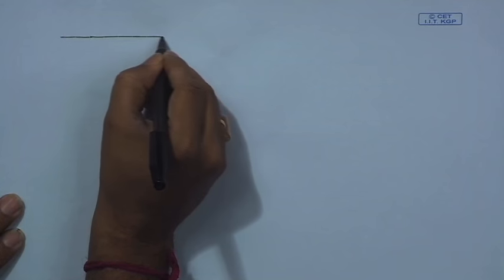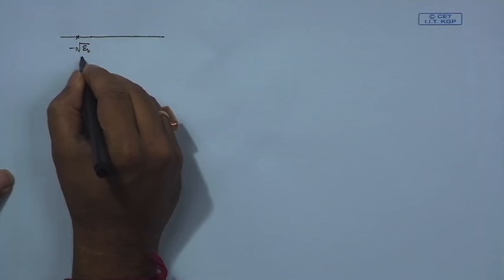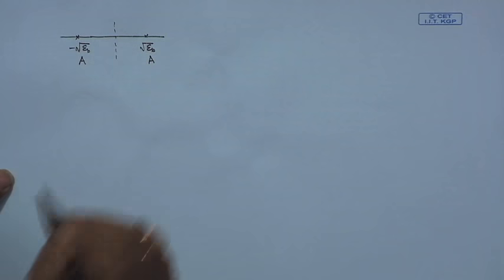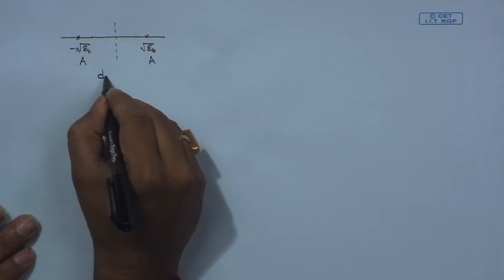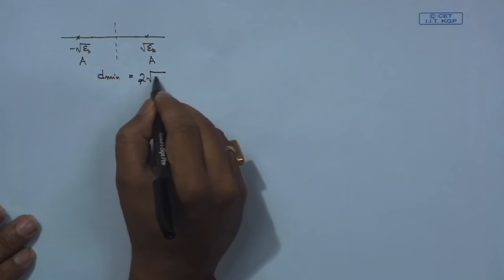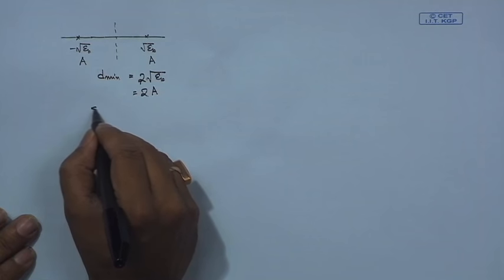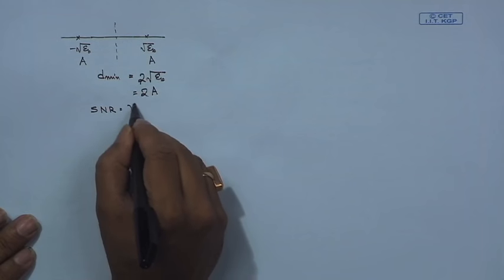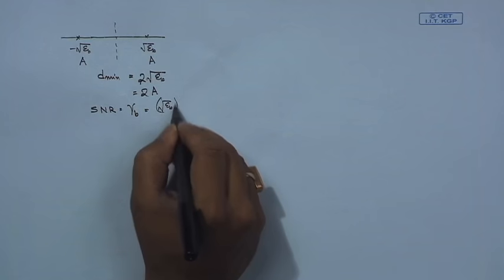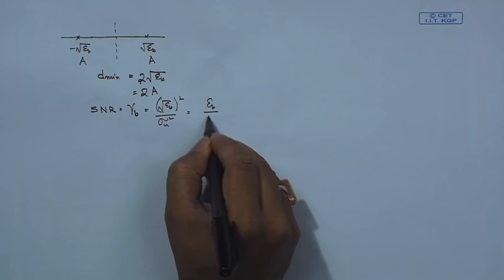To begin, consider a BPSK system where we have one symbol at minus root E_b and another symbol at plus root E_b, which can also be written as 'a'. For this situation, the minimum distance d_min between the constellation points is equal to 2·√E_b, which is also 2a. For BPSK, the SNR per bit gamma_b equals (root E_b)² divided by sigma²_n, the noise variance, which is E_b / N₀.